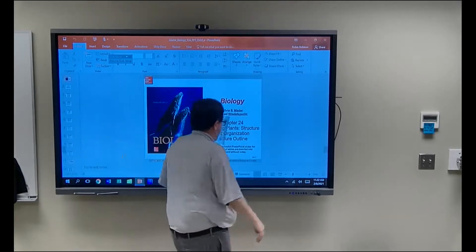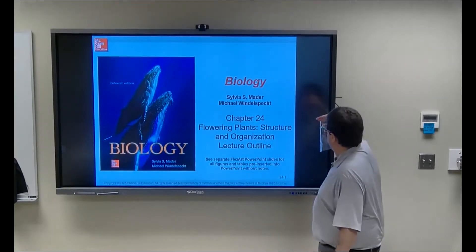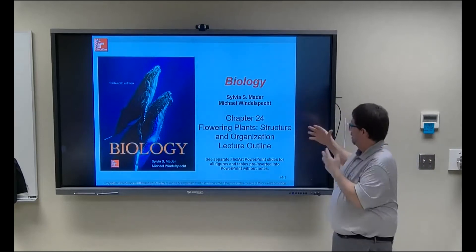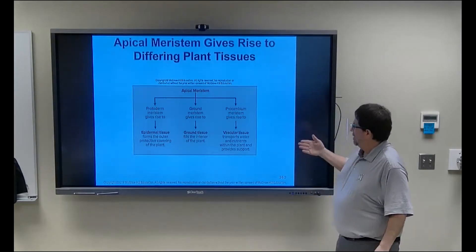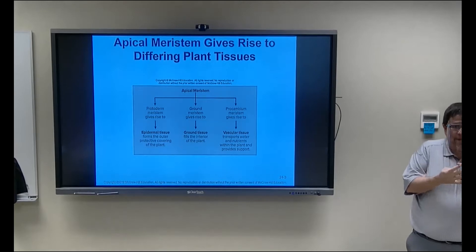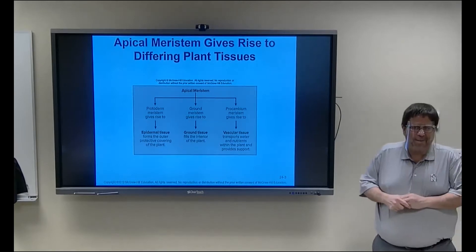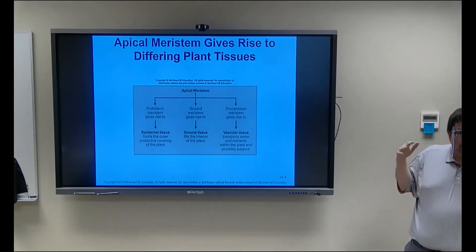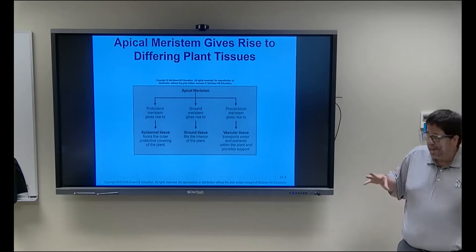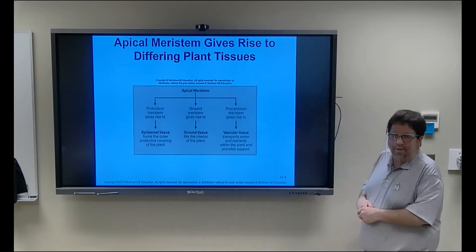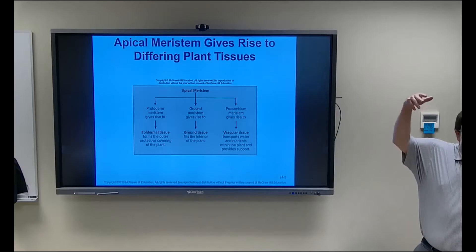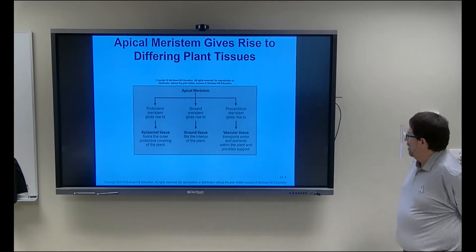Okay, so Chapter 24 — form and function of plants. This is pretty short but really interesting. Right off the bat: what are plants made out of? Plants are made out of three tissues. Animals have four — epithelium, muscle, nerve, and connective tissue. Plants have three: epidermal tissue as the outer covering, vascular tissue to carry water up the plant through xylem and phloem, and ground tissue — the generic plant cell.